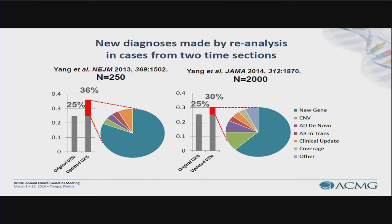Looking at the subsequent study published in JAMA — about 2,000 cases — the initial diagnostic rate was also 25 percent, and over time it's increased to 30 percent. These are two concrete examples of how we will continue to make new diagnoses in the network and how important it's going to be to maintain contact with these patients.